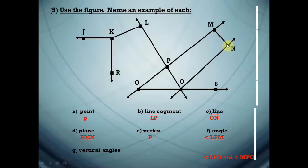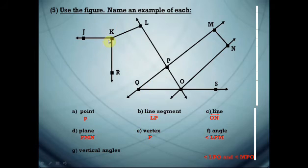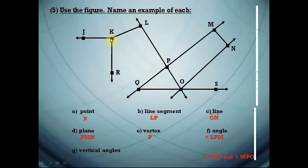Plane — name it by any three points on it. We can name it PMN, MNO, or NOP. Vertex of any angle — we can use point K, point P, point U, or point O. We choose point P. Angle — we have many angles: angle JKR, angle LKR, angle LPM, angle PMN. We write angle LPM.